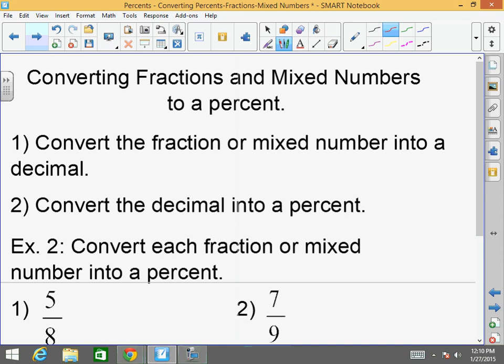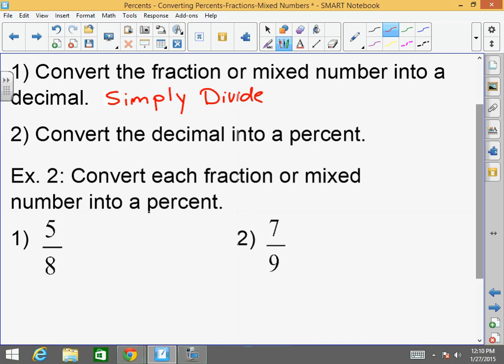Now, how about converting fractions to mixed numbers? This one, in my opinion, is much easier. Number one, convert the fraction or mixed number into a decimal. How? Simply divide. Number two, convert the decimal into a percent. We're going from decimal to percent. So you convert a decimal to percent by moving the decimal two places to the right. And that's it. Done, we're golden.